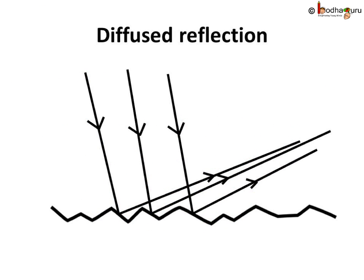When parallel rays get reflected by an uneven surface, the rays get scattered after reflection. That is, they no longer remain parallel after reflection. This is called diffused reflection.